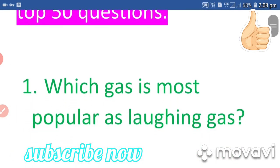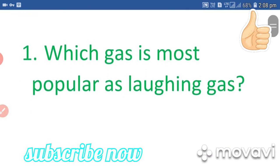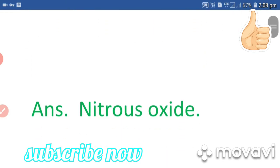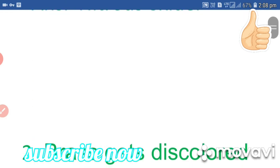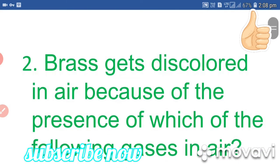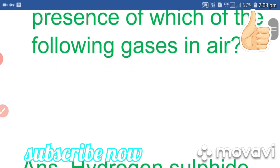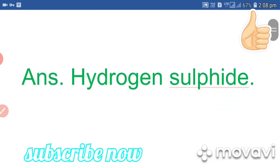Question 1: Which gas is most popularly known as laughing gas? Answer: Nitrous oxide. Question 2: Brass gets discolored in air because of the presence of which gas? Answer: Hydrogen sulfide.